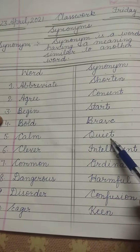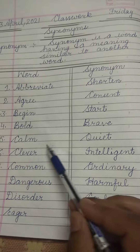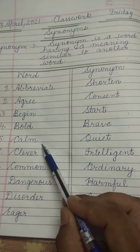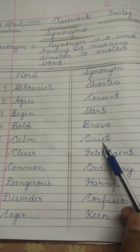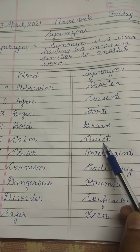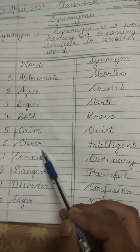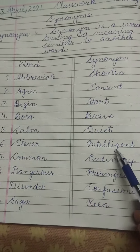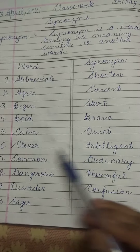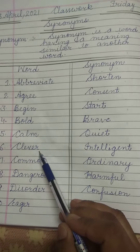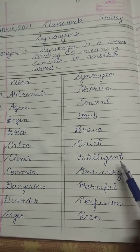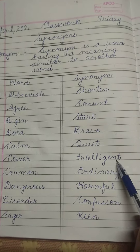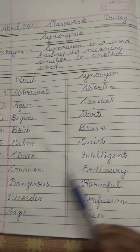Calm and quiet — calm means 'shant' and quiet means 'chup-chap rehena', that is 'shant rehena'. Next: clever and intelligent. Clever kya hota hai? 'Buddiman ya chatur'. And intelligent also means 'buddiman'.